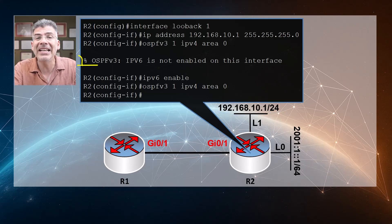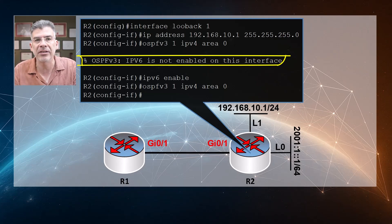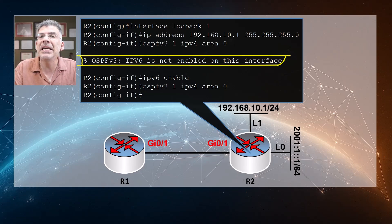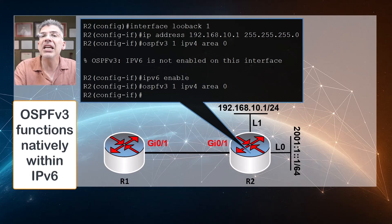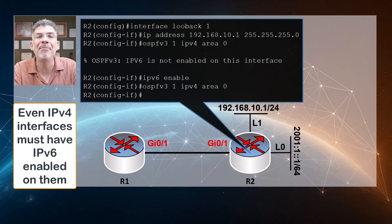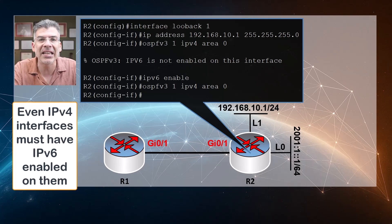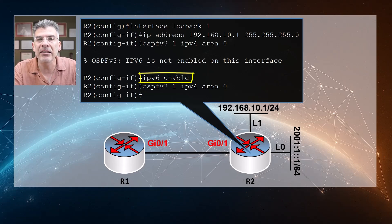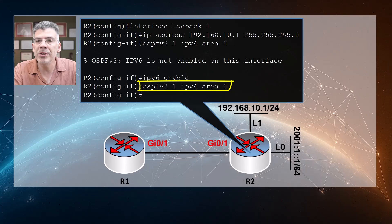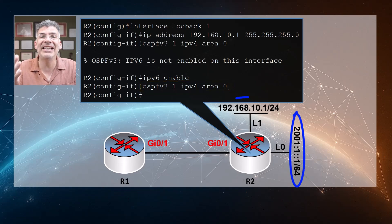It won't let us do that because IPv6 is not enabled on this interface. The interface just has an IPv4 address — but the reason is that OSPF version 3 functions natively within an IPv6 environment, so even interfaces using IPv4 addresses must be at least enabled for IPv6 in order to participate. You don't have to assign an IPv6 address, but IPv6 should be enabled. So we enable it using the 'ipv6 enable' command, then re-issue the OSPFv3 command and it is accepted. Now this IPv6 network and this IPv4 subnet are both being advertised using OSPF version 3.